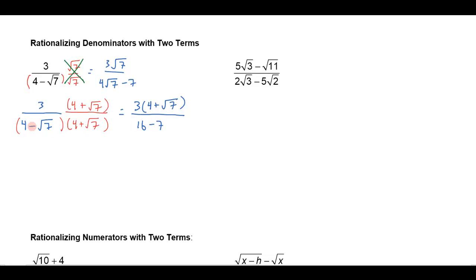Because I would FOIL these out: I'd get 16 from 4 times 4, and then the outers — 4 square root of 7 — and the inners — negative 4 square root of 7 — they'll cancel, because that's that special product. And then the square root of 7 times the square root of 7 makes 7, then I'm going to subtract.